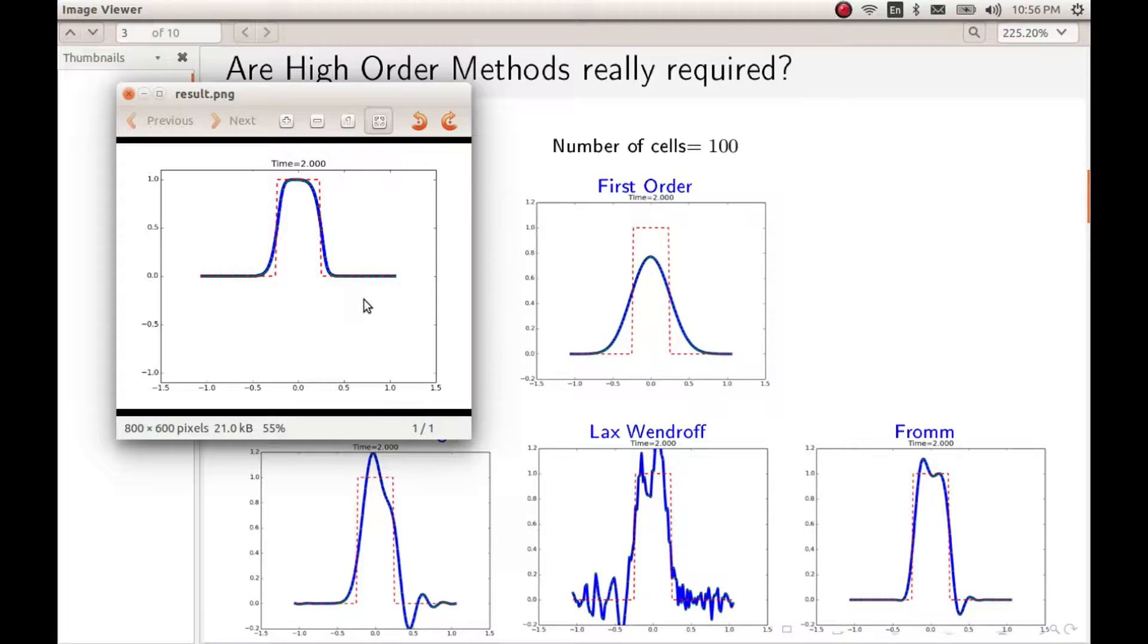We can again do the order of accuracy analysis and see that the order would have maintained to 2, I suppose, for smooth initial distributions. However, at the same time, we have got a better solution for suddenly changing initial distributions.